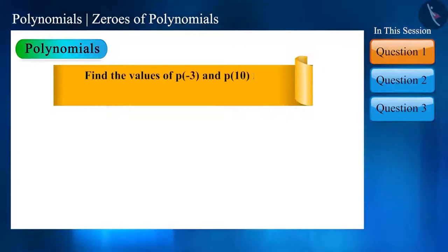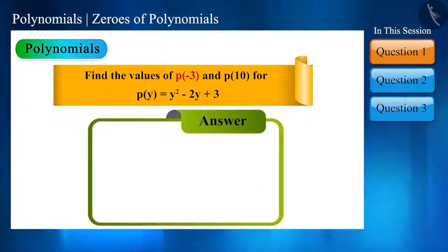Find the values of p(-3) and p(10) for the polynomial p(y) = y² - 2y + 3. This is a very easy question. Let us find p(-3) first. You can also solve this question with me.